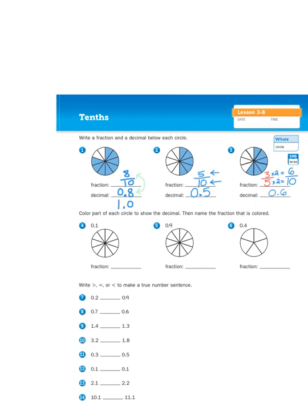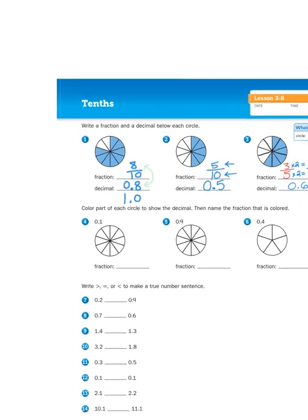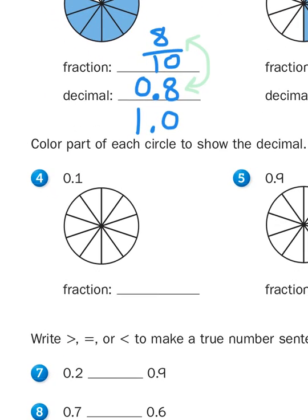The second row of problems asks us to color in the parts first and then show the fraction, so thinking in reverse. So 0.1 is another way of saying 1 tenth, and then I would just shade in one of the 10 parts like so. I think you can do the other two problems pretty easily.